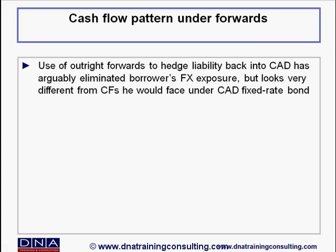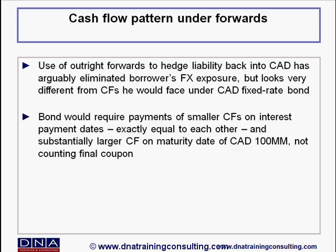The use of outright forwards to hedge the liability back into Canadian dollars has arguably eliminated the borrower's FX exposure, but still looks very different from the cash flows the borrower would face if he had issued a Canadian dollar fixed-rate bond directly. A direct bond issue would have required smaller cash flows on interest payment dates — ones exactly equal to each other — and a substantially larger cash flow on the maturity date, namely 100 million Canadian dollars, not counting the final coupon.